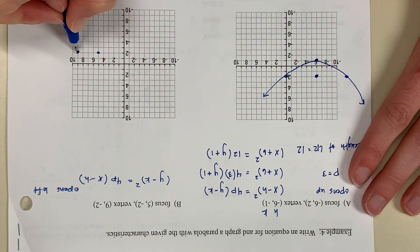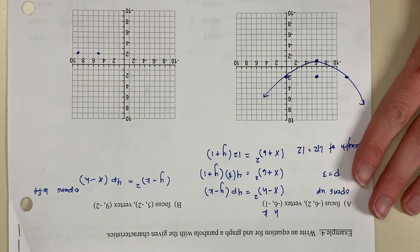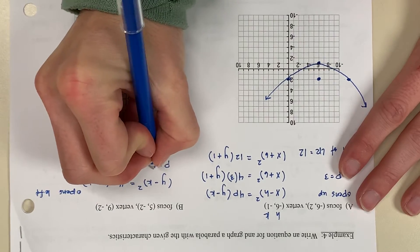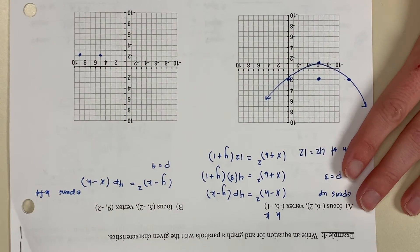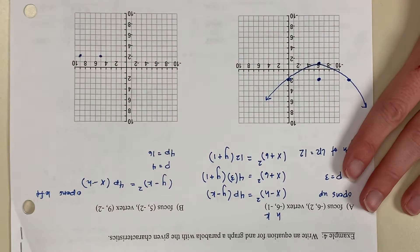Excuse me, from the vertex to the focus. So it is 1, 2, 3, 4 units from the vertex to the focus. So p is equal to 4. That means 4p or 4 times 4 is 16.